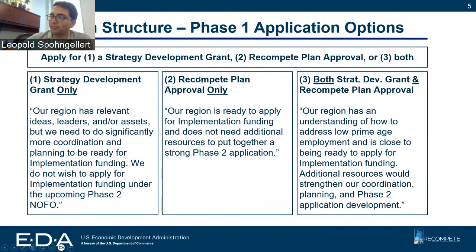If you're only applying for recompete plan approval, you might say: our region is ready to apply for implementation funding and does not need additional resources to put together a strong Phase 2 application. And if you plan on applying for both, you might say: our region has an understanding of how to address low prime age employment and is close to being ready to apply for implementation funding, but additional resources would strengthen our coordination, planning, and Phase 2 application development.